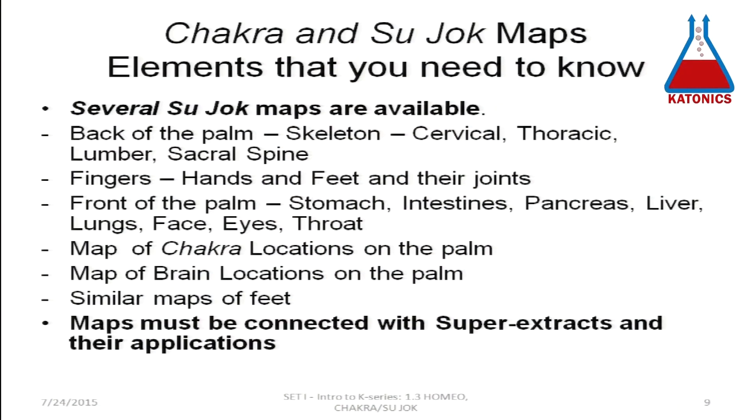But we just explored this under the principle of curiosity-driven exploration. We had the Sujok map — available on the back of the palm — showing the skeleton: cervical, thoracic, lumbar and sacral spine. The fingers represent hands, feet and their joints, and the front of the palm shows stomach, intestine, pancreas, liver, lungs, face, eyes and throat. Similarly, the chakra locations and brain locations are also mapped on the palm, and there are similar maps of the feet. We therefore decided to explore these map locations with super extracts for a wide range of applications.